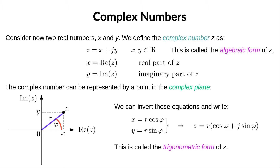We can also invert this equation and write that x is the modulus times the cosine of the phase, while y is the modulus times the sine of the phase. If we substitute these into the algebraic form of z, we obtain the trigonometric form of z: z equals r times the quantity cosine phi plus j sine phi.